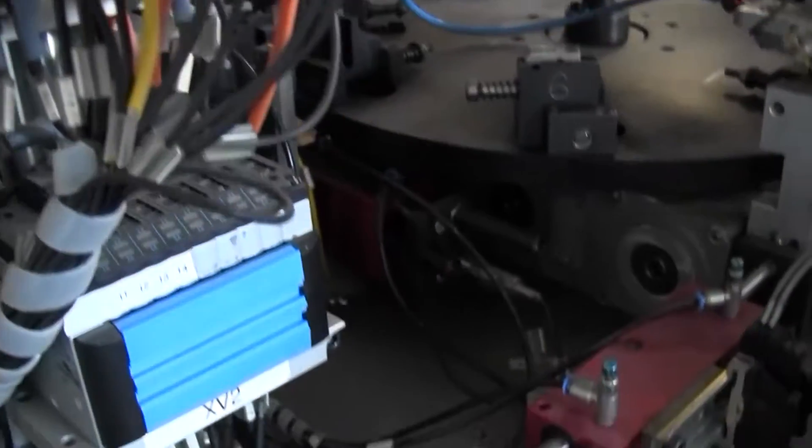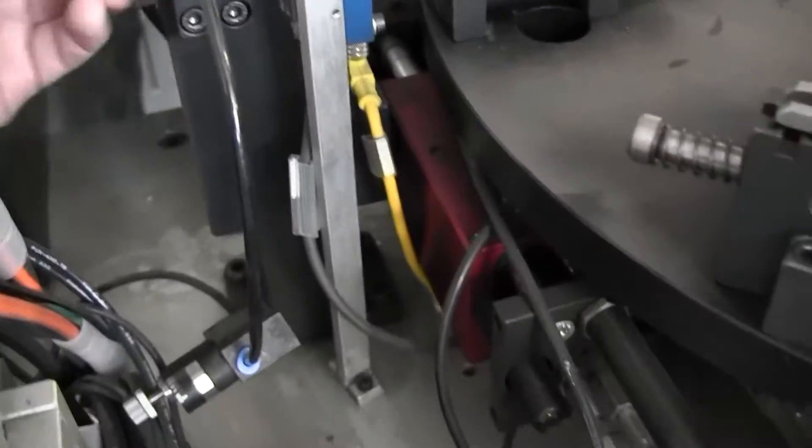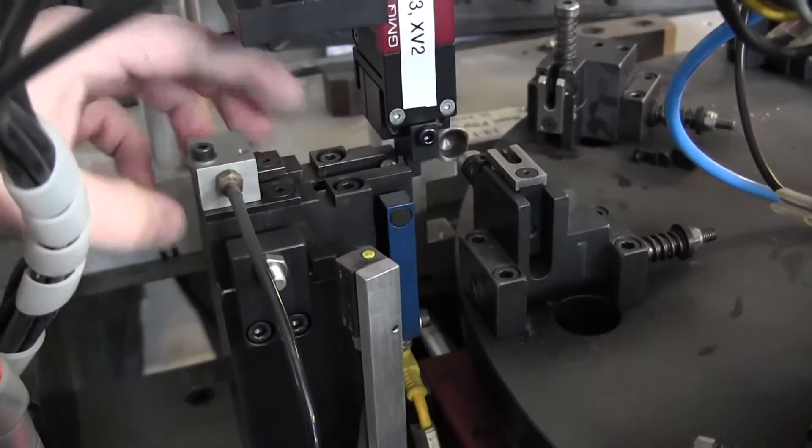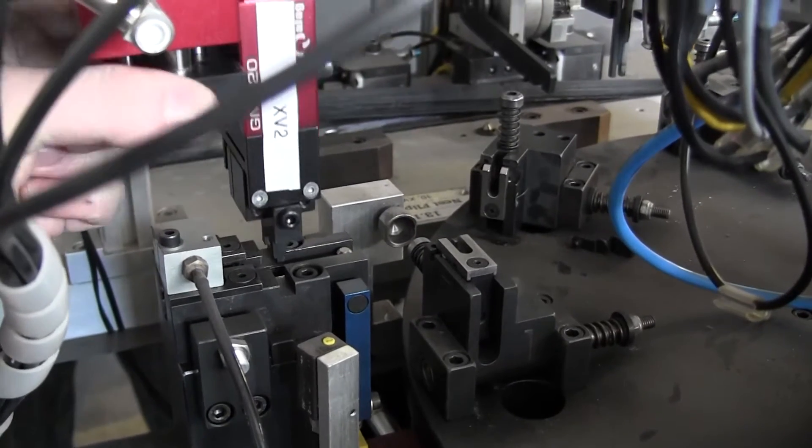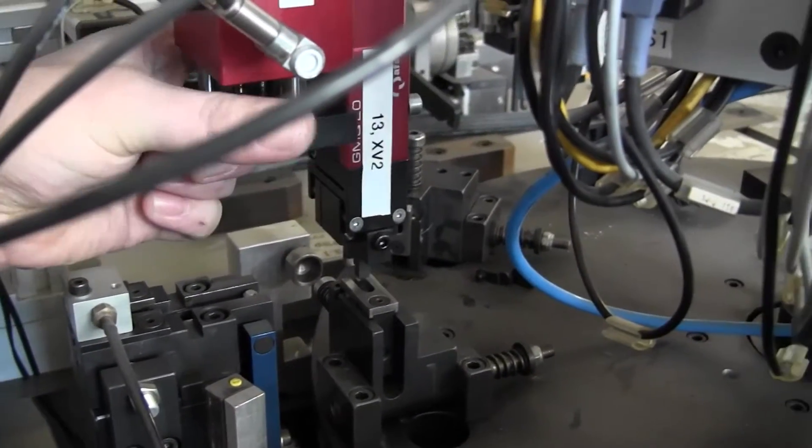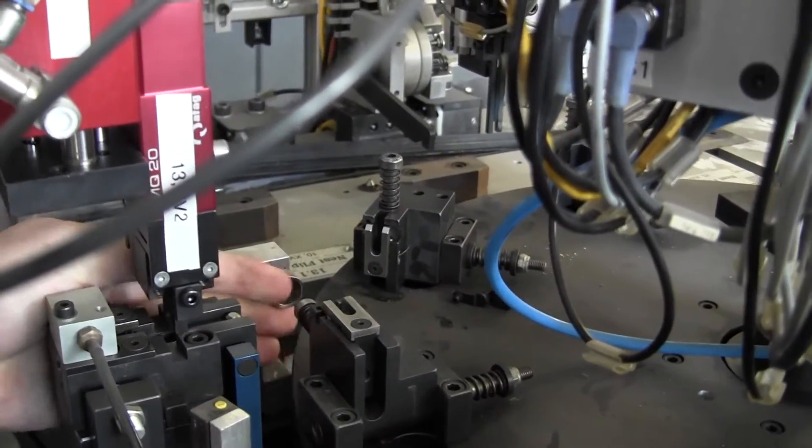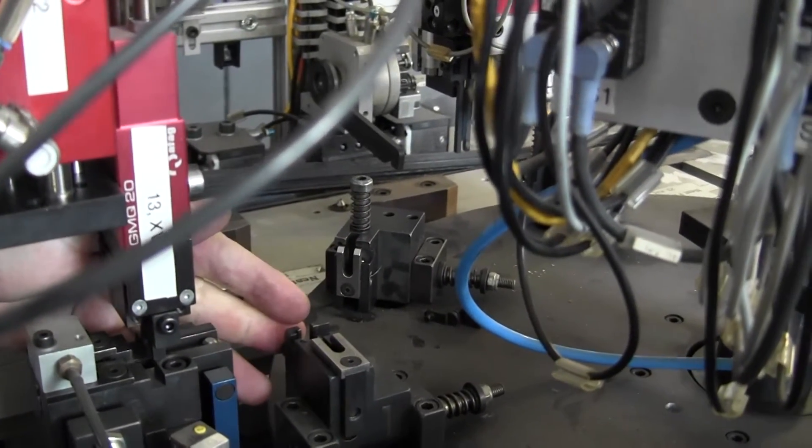At this first station here, this plastic reversion lever is fed. It's on a feeding bowl and it made its way into this track here, down to this dead section. And then this handling unit would come back, pick it up, come over the nest here, and place it inside of that nest there.